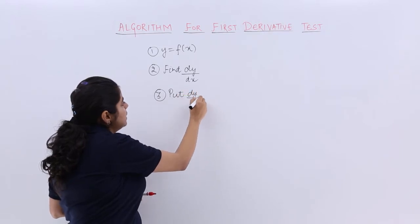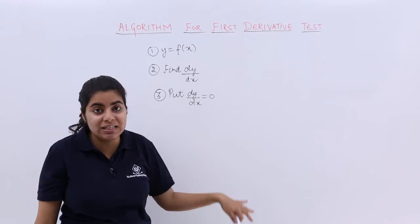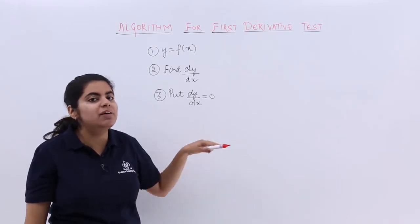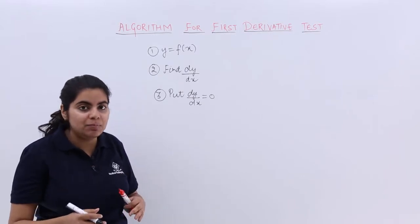You have to substitute dy by dx equals zero. Now if while putting dy by dx equal to zero, you come to know about certain facts. Suppose I have the differentiation as x squared minus, say, 25.